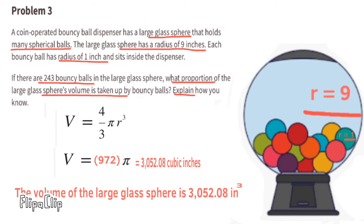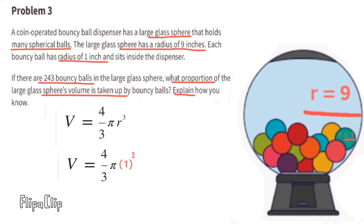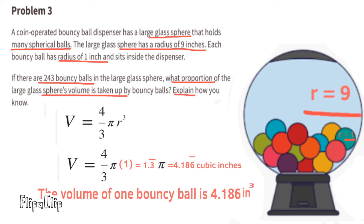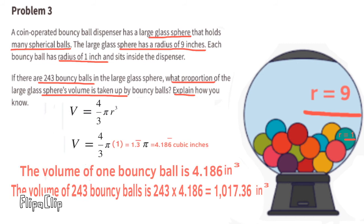Now we need to find the volume of the bouncy balls. Since the bouncy balls have a radius of 1, we can substitute the r with a 1. The volume for each bouncy ball would be 4 thirds times pi times 1, or 1.3 repeating times 3.14. The volume for each bouncy ball would be 4.186 cubic inches.